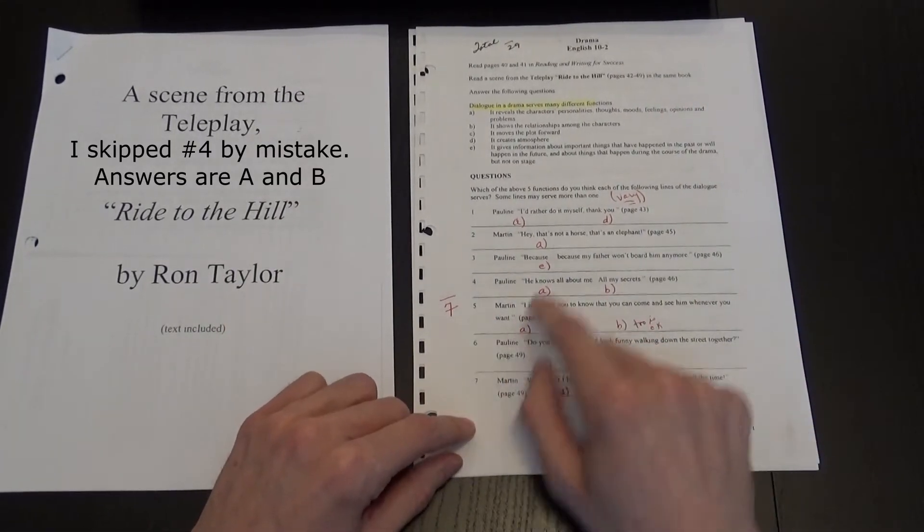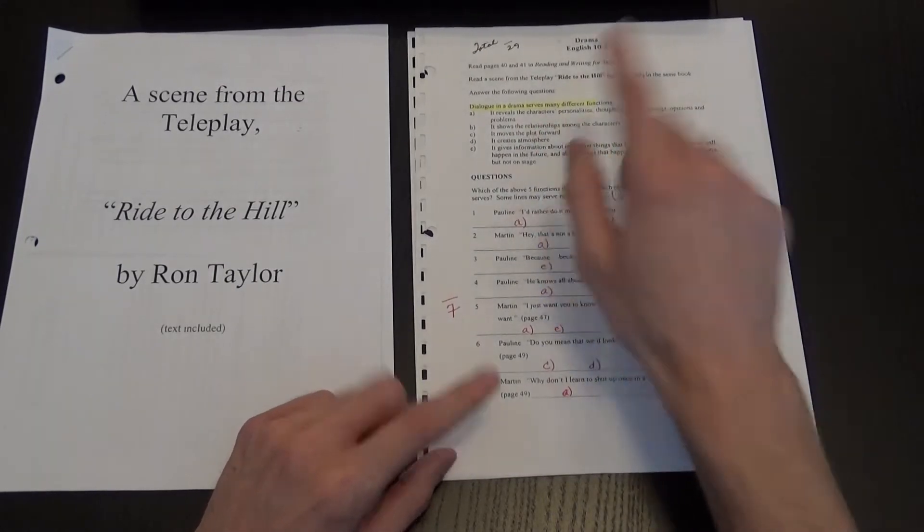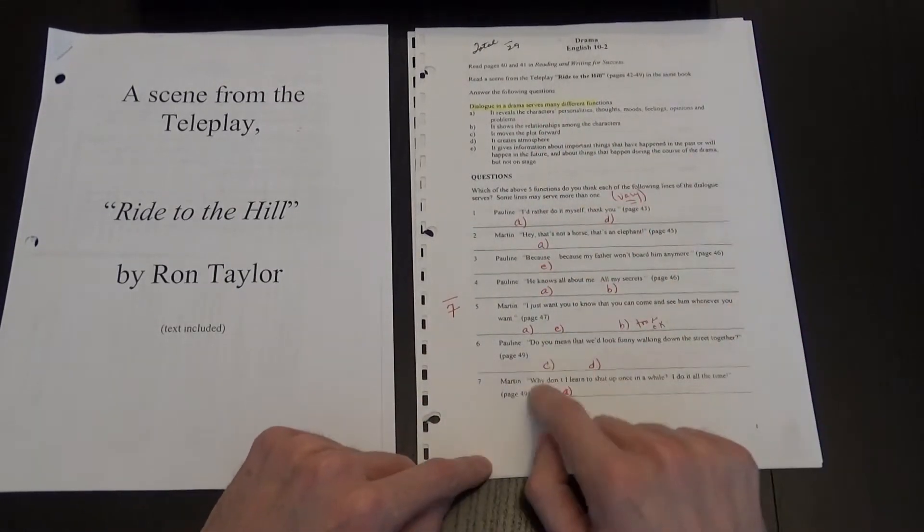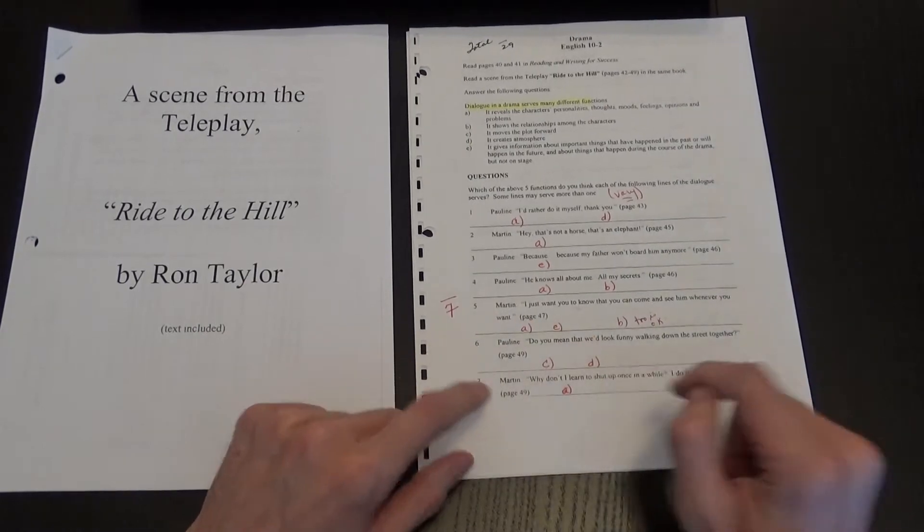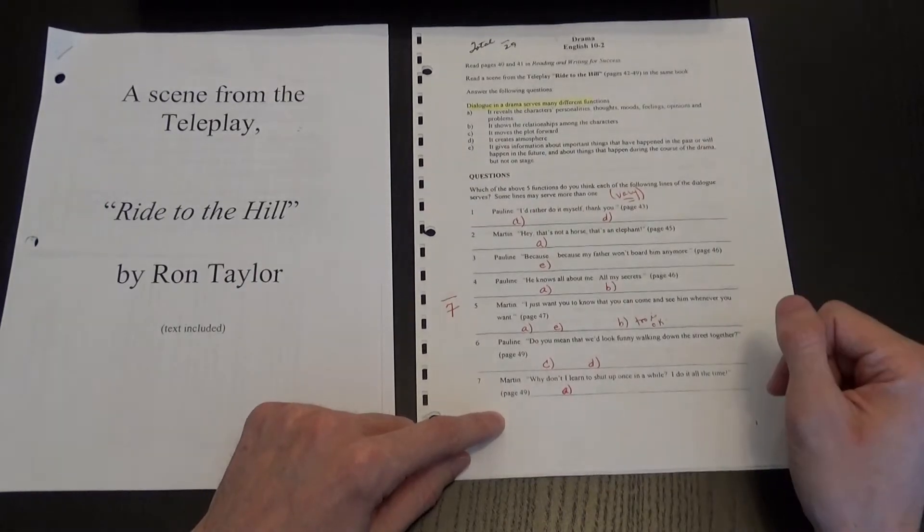Five, we have A and E, and B would also be considered okay. Then we have number six, C and D, so it moves the plot forward and it creates atmosphere.